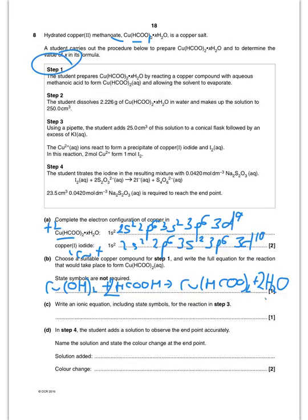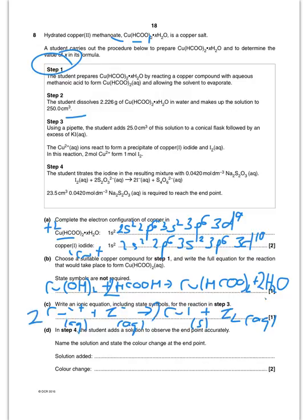For the ionic equation for step three: Cu²⁺ ions react with iodide ions to form a precipitate of copper(I) iodide and iodine: 2Cu²⁺(aq) + 4I⁻(aq) → 2CuI(s) + I₂(aq). State symbols are included; the copper iodide is a precipitate and the rest are aqueous. For step four, starch solution is added to observe the endpoint, with the colour change from blue-black to colourless.